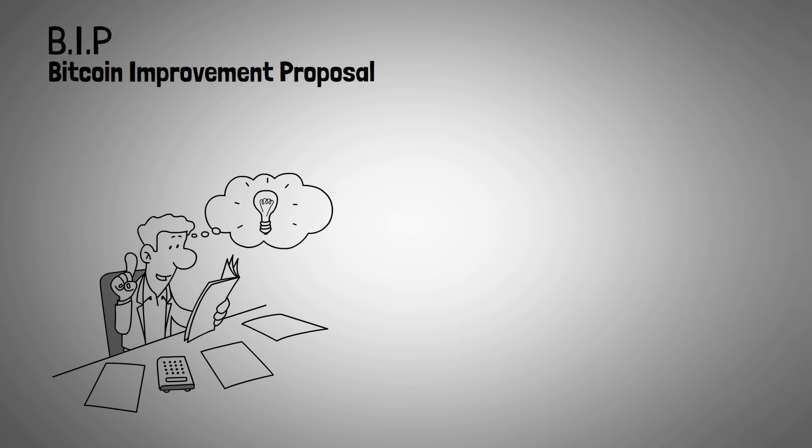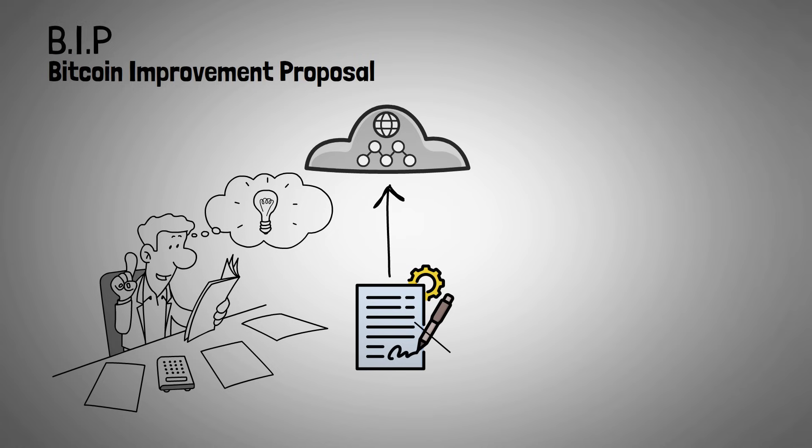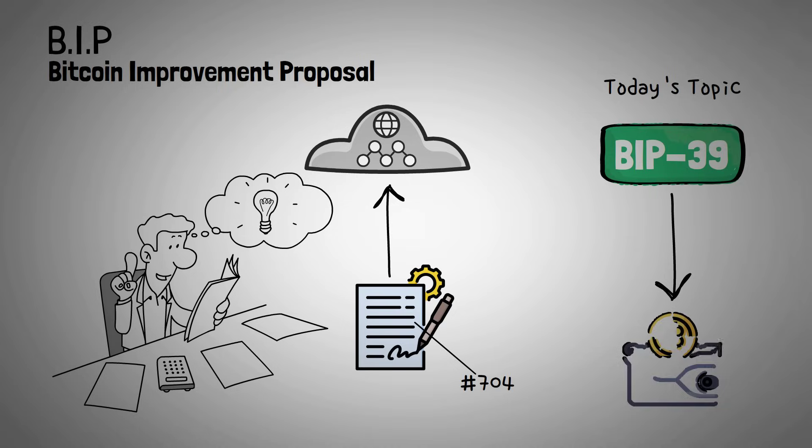BIP, or B-I-P, is an acronym that stands for Bitcoin Improvement Proposal, and anytime someone creates a proposal, the idea is assigned a number. Today, we're going to be looking at BIP39, which outlines a standard way to create and backup a crypto wallet using a mnemonic phrase.